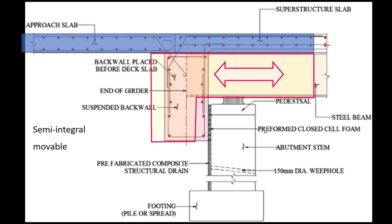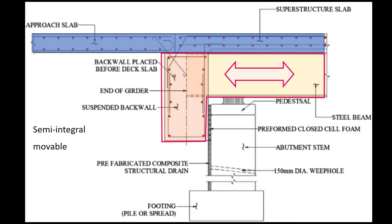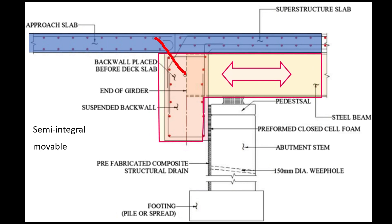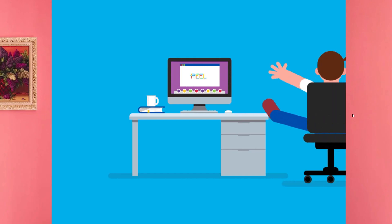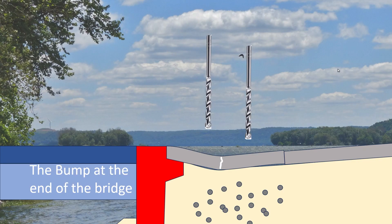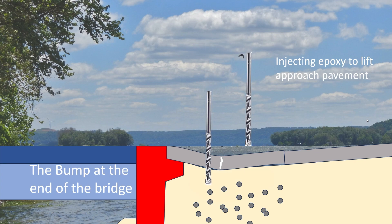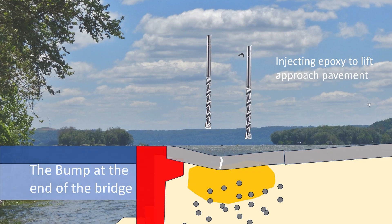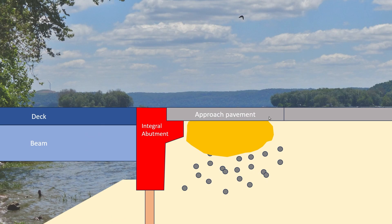So that's how it moves — it's one giant piece. There's steel from the approach pavement tied together with steel from the deck. Now, some ways you can fix the bump — and this is really low-tech animation — you can drill cores into the concrete and inject epoxy to lift the approach pavement back into place so you can drive on it again.